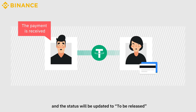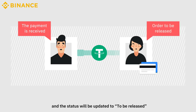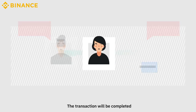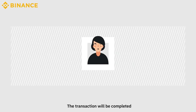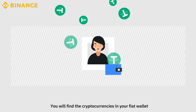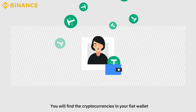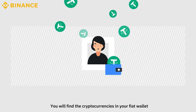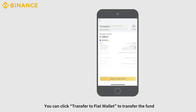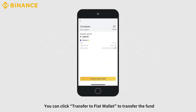The status will be updated to To Be Released, and then the transaction will be completed. You will find the cryptocurrencies in your fiat wallet. You can click Transfer to Fiat Wallet to transfer the funds and start trading crypto to crypto.